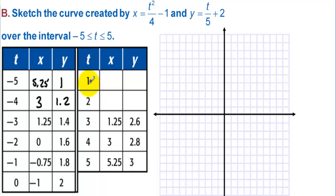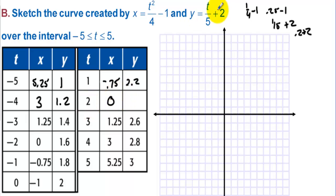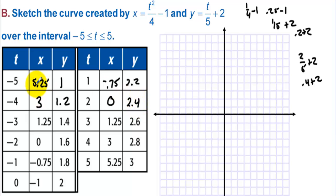Let's plug in some positive values for t. When we plug 1 in, we get 1/4 minus 1, that's 0.25 minus 1, which is negative 0.75. When we plug 1 in for y, we have 1/5 plus 2, which is 0.2 plus 2, so we get 2.2. Plugging 2 in, we get 4/4, that's 1 minus 1, which is 0. Then 2 in for y is 2/5 plus 2, that's 0.4 plus 2, we get 2.4.